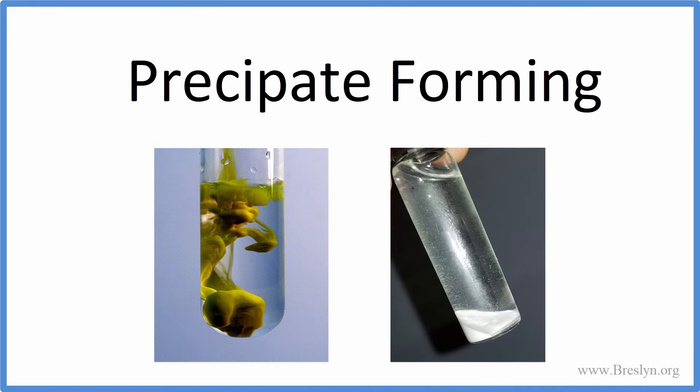The formation of a precipitate is usually evidence of a chemical reaction. This happens when you mix two liquids together and a solid forms, and that solid falls to the bottom of the test tube.